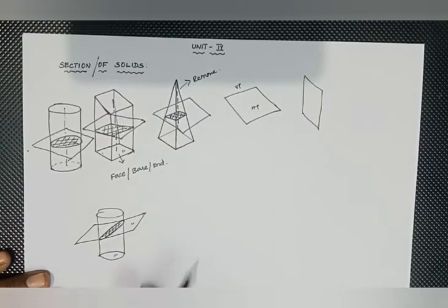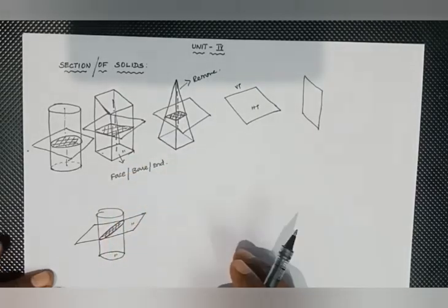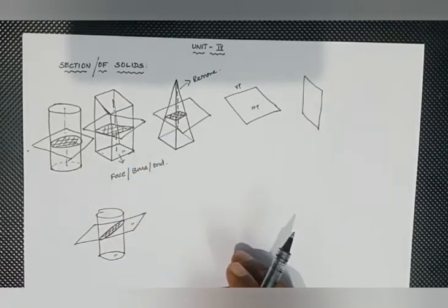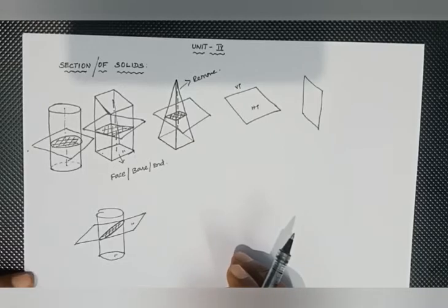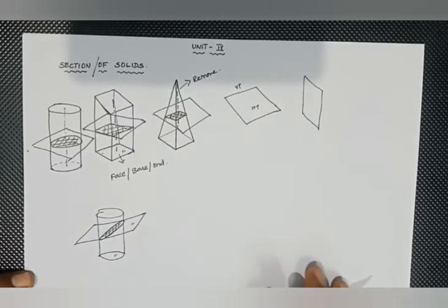This is the shape of the base. This is the square prism — the pentagon, the hexagon. The shape of the base is the hexagon of the solids.